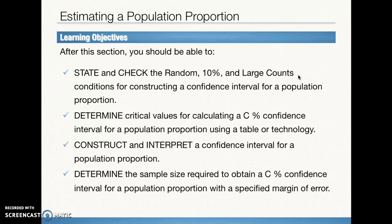At the end of this section, we should be able to state and check the random, 10% (which is the independence condition), and large counts (which is the normal condition) for constructing a confidence interval for a population proportion. Pay attention to the details on that, especially when working on practice problems. Make sure you follow the instructions very carefully.